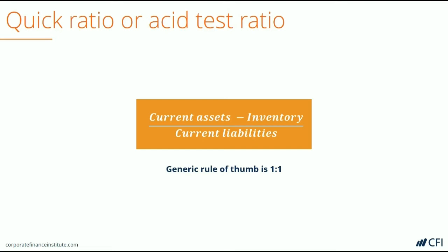Because inventory is already excluded, there's not as much of a buffer required as there is with the current ratio. This rule of thumb, however, is flexible and, depending on the industry and the state of the company, it may actually require a higher ratio.